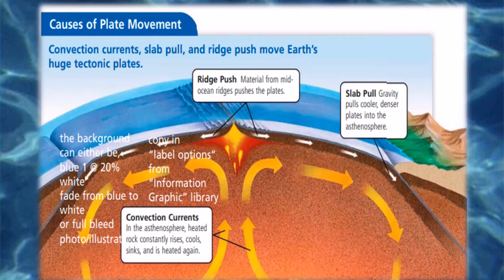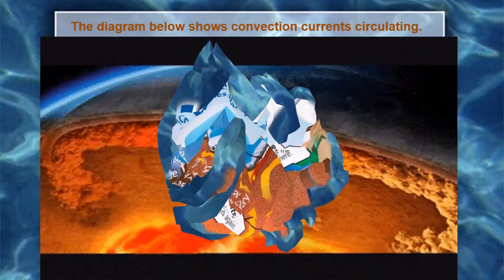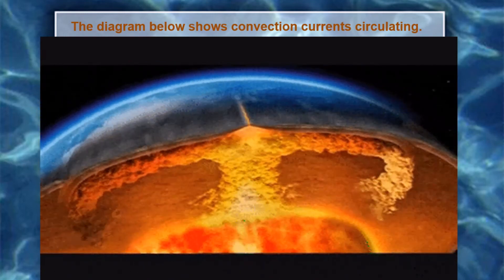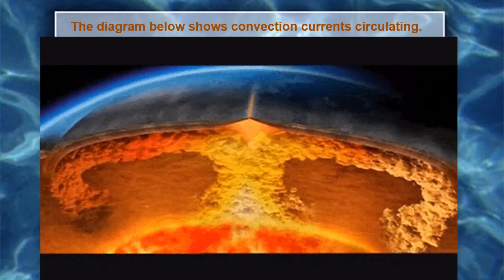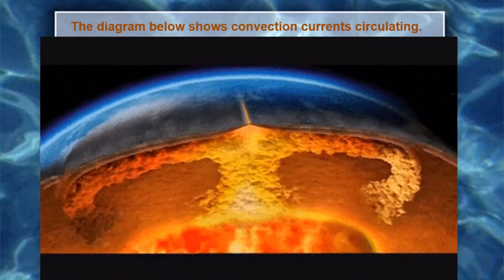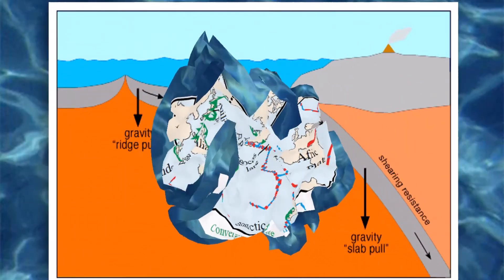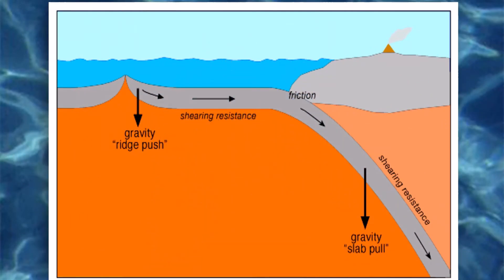You can imagine the lithosphere as solid pieces of pavement resting on hot tar. The lithosphere is made up of many plates. Scientists discovered that the lithosphere does not form a continuous shell around Earth — instead, it is broken into many large and small slabs of rock called tectonic plates. Scientists do not know exactly how or when in Earth's history these giant plates formed.